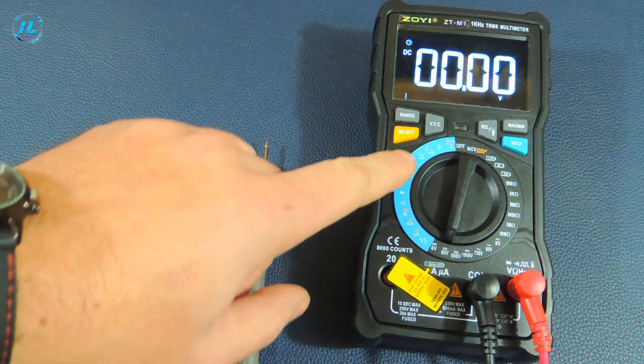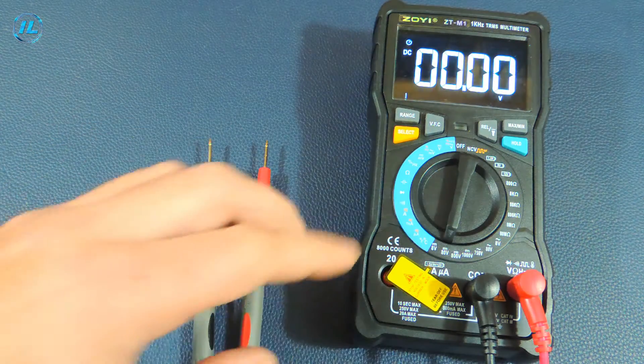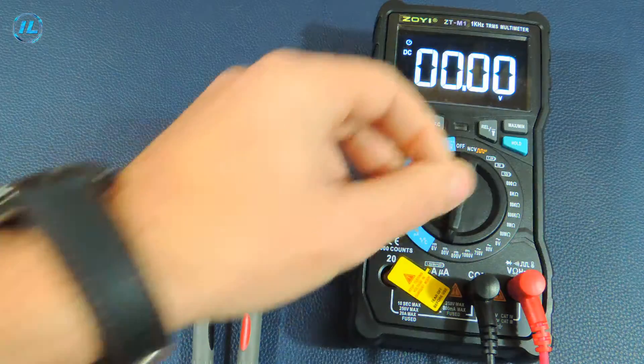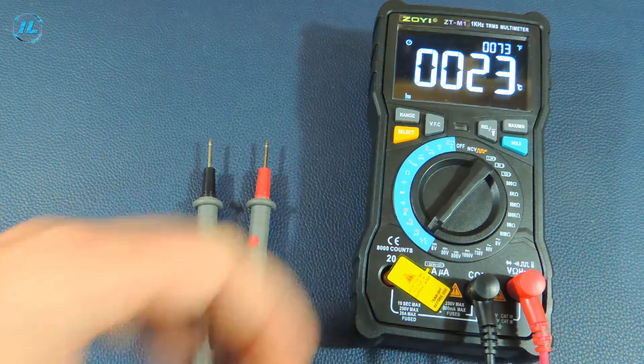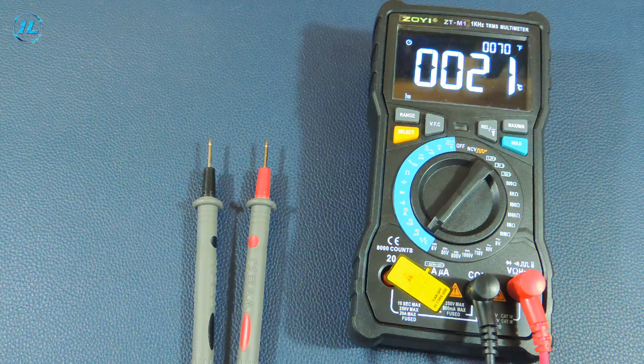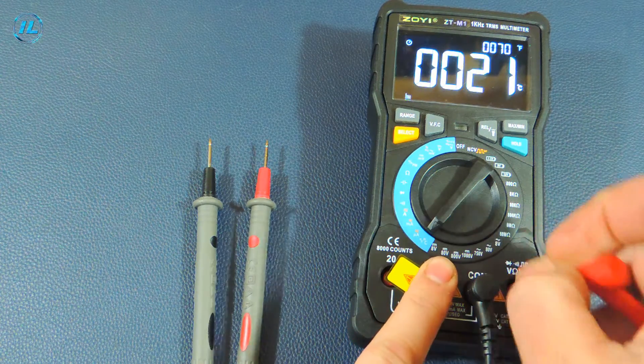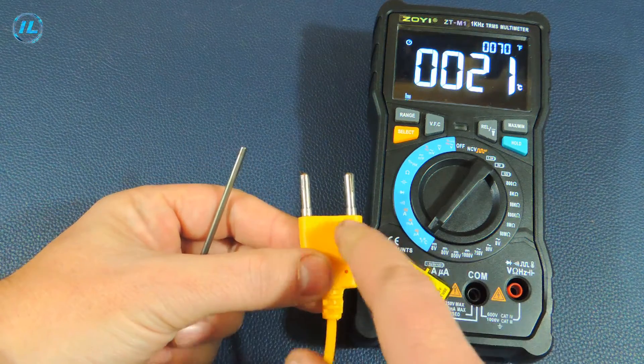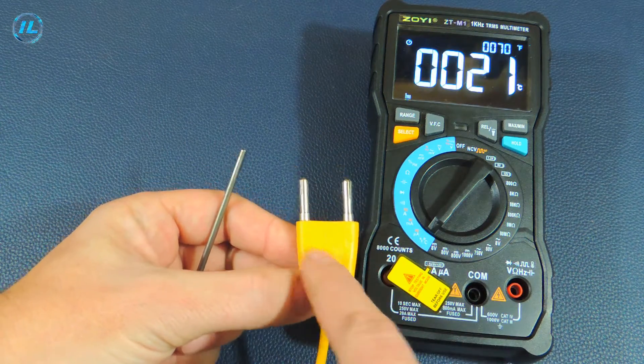Now the blue part of the mode dial switch begins. That is, measurements are already taking place in automatic mode here. The first point is the temperature measurement. To measure the temperature, you need to install a thermocouple instead of probes. When connecting a thermocouple, the polarity must be taken into account. That is, the negative pin must be installed in the black socket.